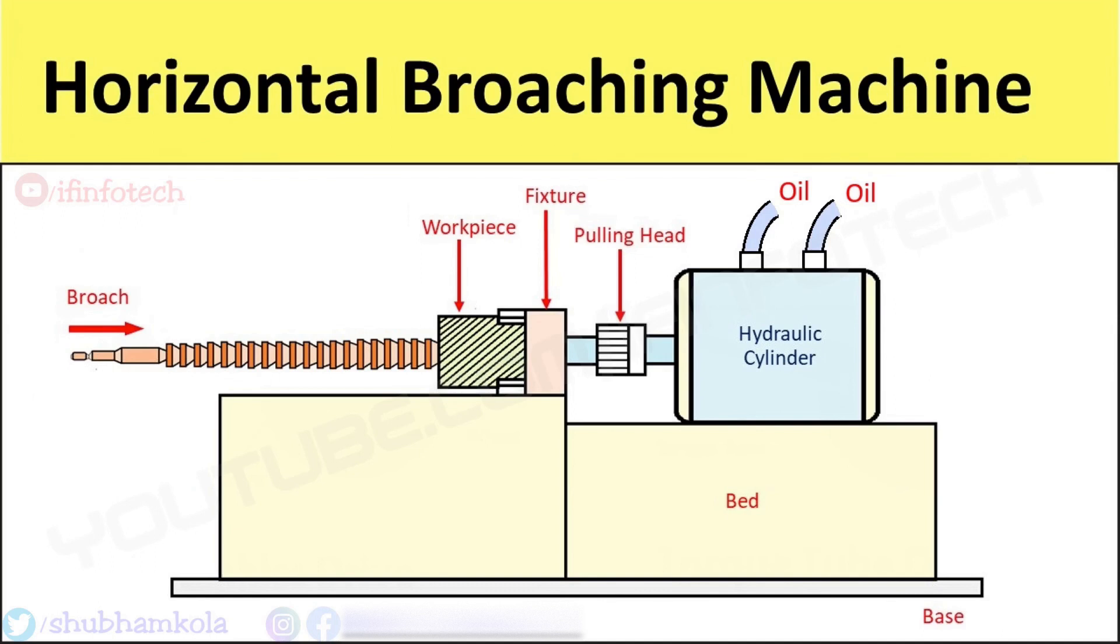This machine is used for internal as well as external broaching. Internal broach is used to increase hole size and finishing, while external broach is used to make external shapes.